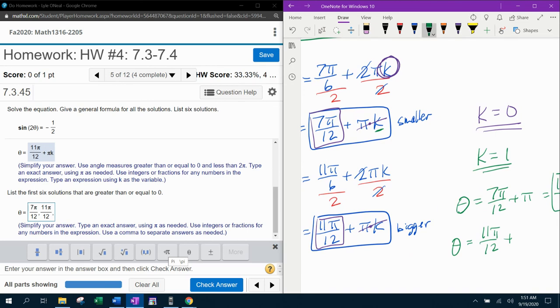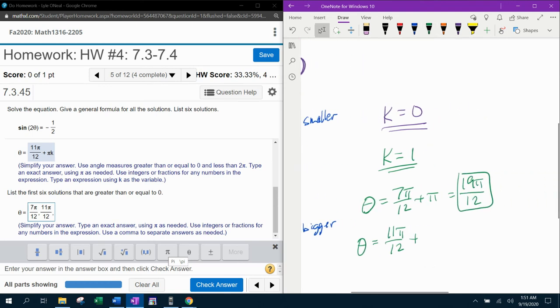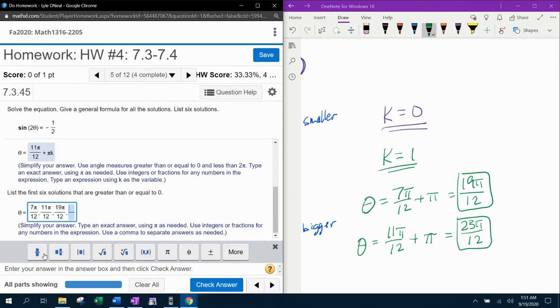And we're going to have another angle theta that's going to be our 11 pi over 12 coming from right here, 11 pi over 12. And again, k is 1. So 1 times pi is pi. And then I'm going to need a common denominator to add those. So 11 pi over 12 plus 12 pi over 12 is going to be 23 pi over 12. And let's go ahead and input those into MyLabMath. That's our next two angles. 19 pi over 12 and 23 pi over 12.